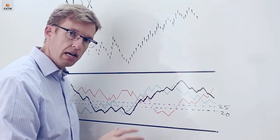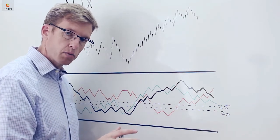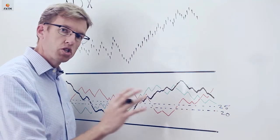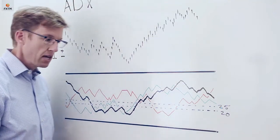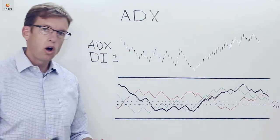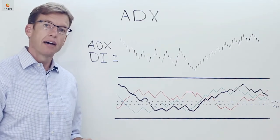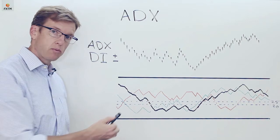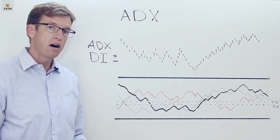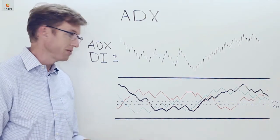The directional indicators are the portion of the indicator that we're going to be using to identify which direction the trend is actually going. Now the idea is to look for long opportunities when the ADX line is above 25 or certainly above 20, and the directional indicator, the green one, the positive one, crosses above the directional indicator negative, the red one.